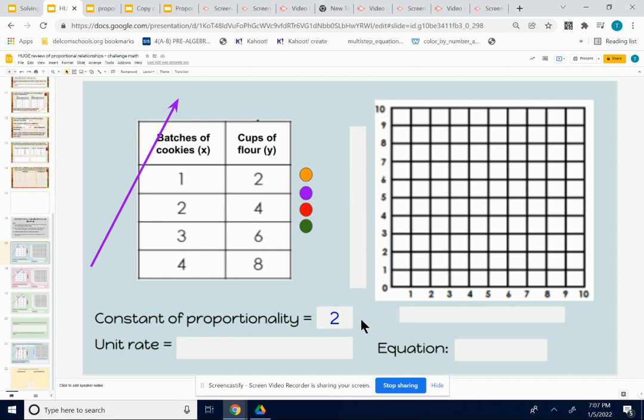The unit rate is just sticking labels with that. Just think about this. When I take two divided by one, I'm really taking two cups divided by one batch. Two cups of flour divided by one batch is two cups per batch. Four cups divided by two batches would be two cups per batch. See, it's always taking the cups of flour per batch when I divide y by x.